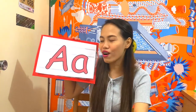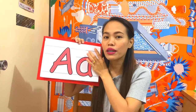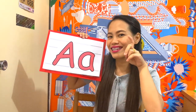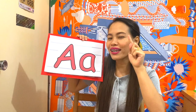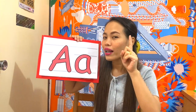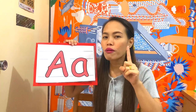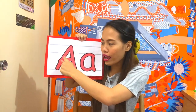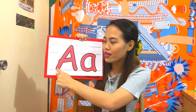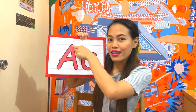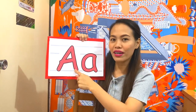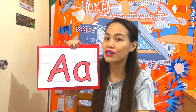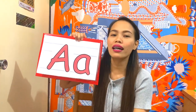Very good! Now we are going to learn how to write letter A. Everybody point your finger like this. Look, everybody point your finger like this. So now, let's start at the top. You should always start at the top here. Now, going down. There. And then, start here again. And then, go down. Very good! And then, start here. And then, here. Very good! That's how you write letter A. The big letter A.